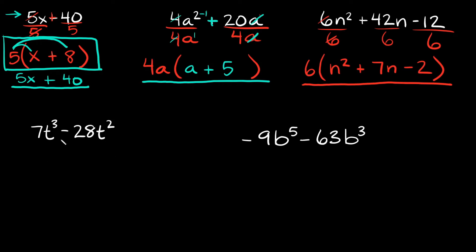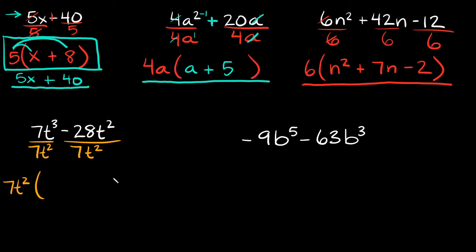Next we have 7t cubed minus 28t squared. What's the biggest term we can pull out? We can pull out a 7, since that's the biggest number dividing evenly into 7 and 28. For the 't' terms: here we have 3 t's and here we have 2 t's, so we can pull out 2 t's from each side. That makes our greatest common factor 7t squared.